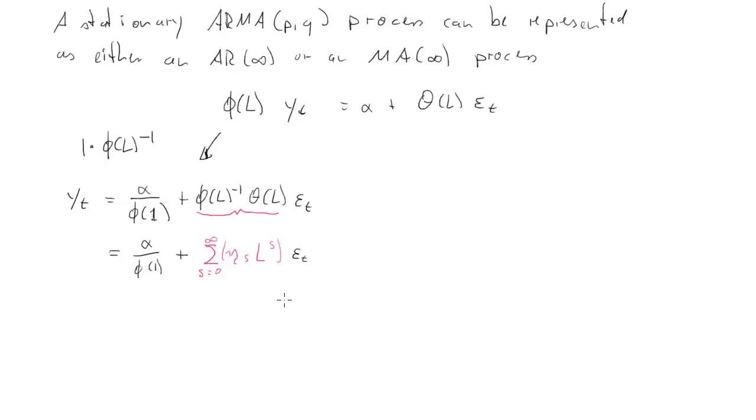This little lag process here produces just lags eta_s with lag operator L to the power s, and the sum of all s from 0 to infinity, and that times the epsilon_t. Here we'll just get eta_0 times epsilon_t plus eta_1 times epsilon_t minus 1 plus eta_2 times epsilon_t minus 2 and so forth. These etas result from a combination of the parameters in the lag polynomials phi(L) and theta(L). What we see here is really an MA infinity process.